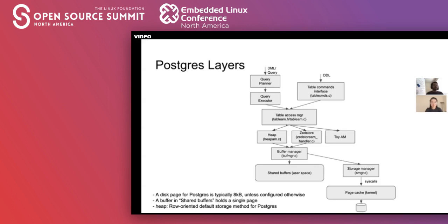Let's talk about Postgres's layers and where the table access method fits in to Postgres's backend. It lies between the query planner, query executor — which handles DML and select queries — and the table commands interface, which handles DDL, and the buffer manager, which handles the shared buffers, buffering in main memory the on-disk pages that pertain to the relation.